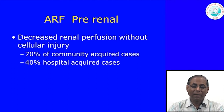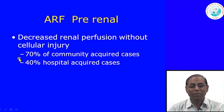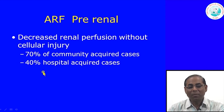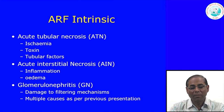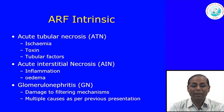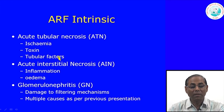Pre-renal involves decreased renal perfusion without renal cellular injury and accounts for about 70 percent of community-acquired cases. Focusing now on ARF due to renal cause: acute tubular necrosis is one of the most important causes of acute renal failure. It may result from three main causes — ischemic, toxic, or other intrinsic tubular factors.